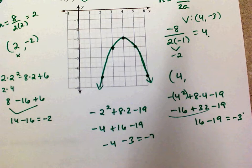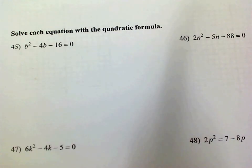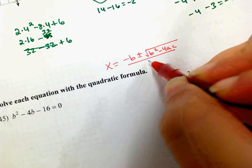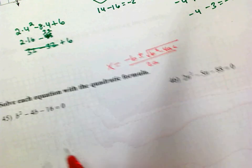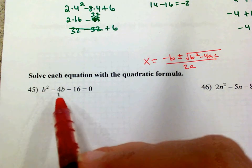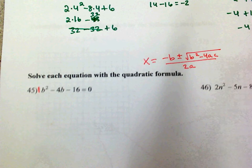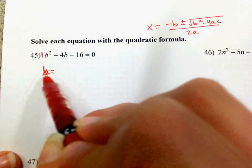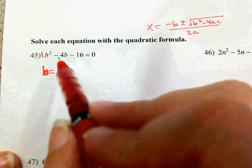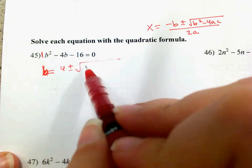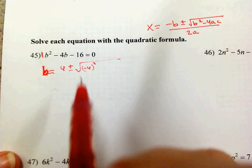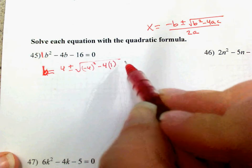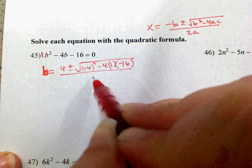Now let's talk about the quadratic formula. The quadratic formula is: x equals negative b plus or minus the square root of b squared minus 4ac, all over 2a. Just as a reminder, make sure you know what a, b, and c are for your equation. Here a is 1, b is negative 4, and c is negative 16.